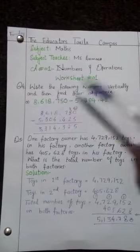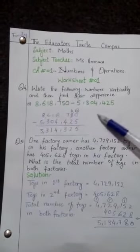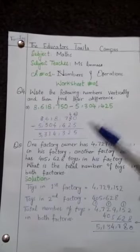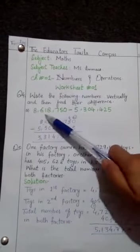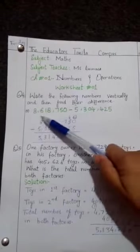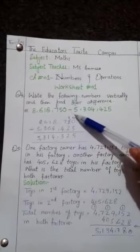numbers vertically and then find their difference. We will solve this question the same way as the previous question that was for addition. First of all, we will write the first value here, and then we will write